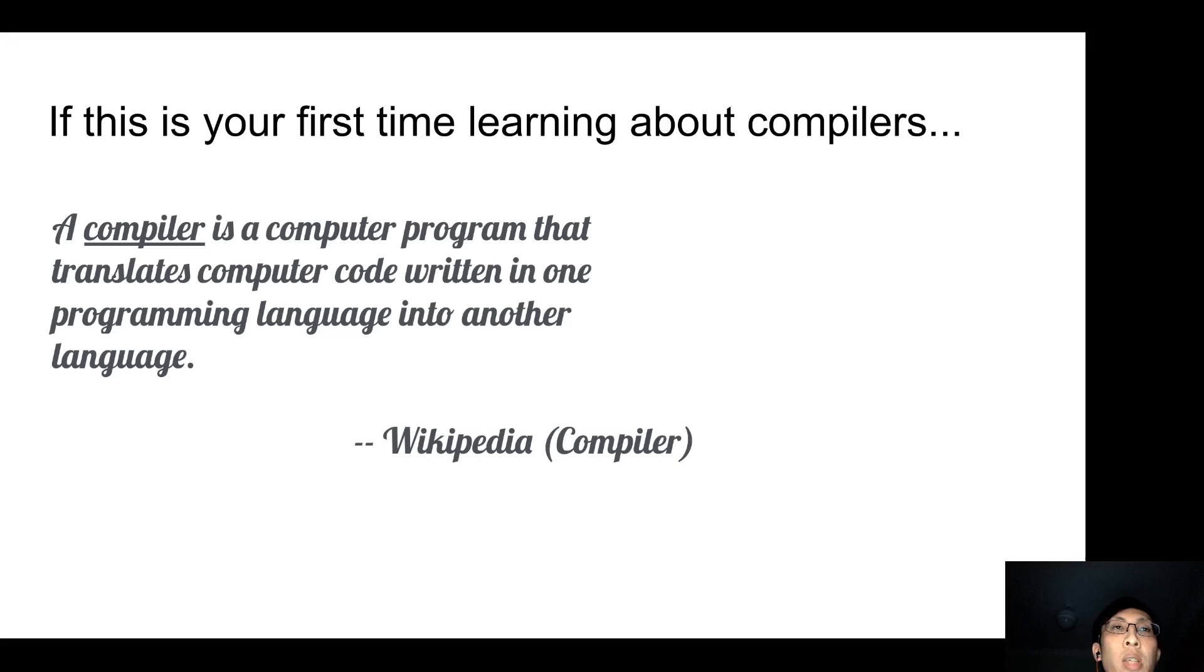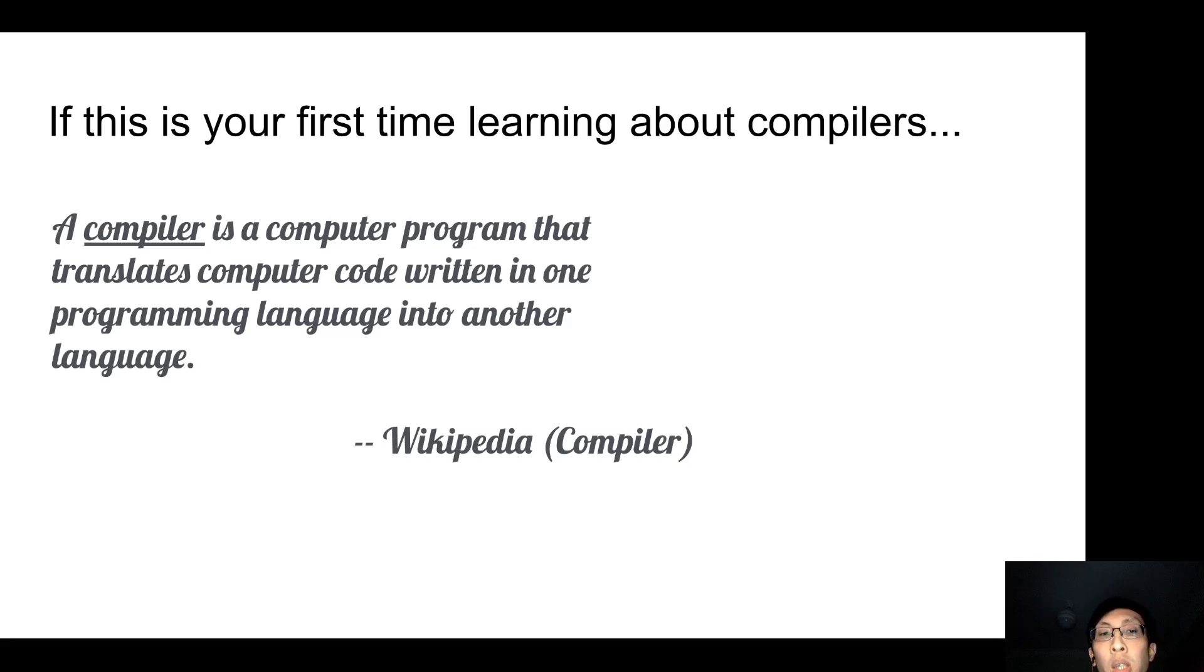If this is the first time you're learning about compilers, according to Wikipedia, a compiler is a computer program that translates computer code written in one programming language into another language. Let's look at a few examples of compilers in real life.